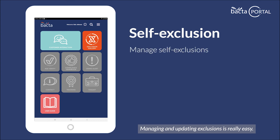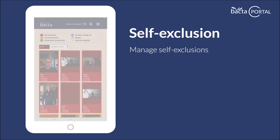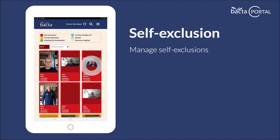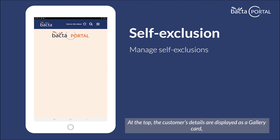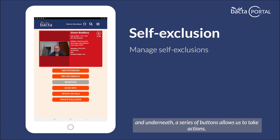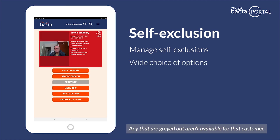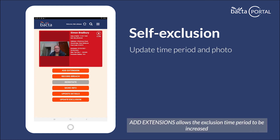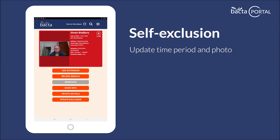Managing and updating exclusions is really easy. Simply click on the card you require. At the top, the customer's details are displayed as a gallery card, and underneath a series of buttons allows you to take actions. Any that are greyed out aren't available for that customer. Add extensions allows the exclusion time period to be increased. The customer photo can also be updated here.